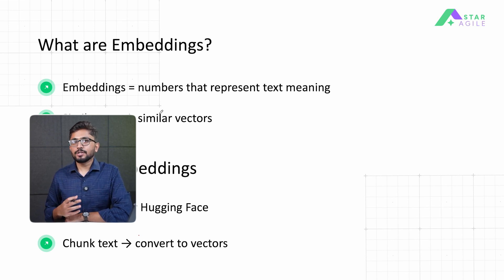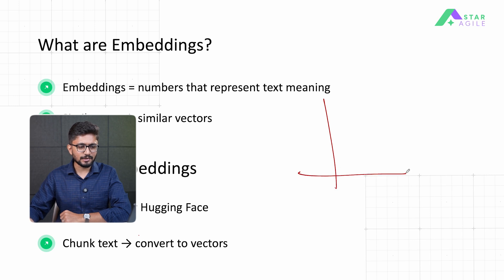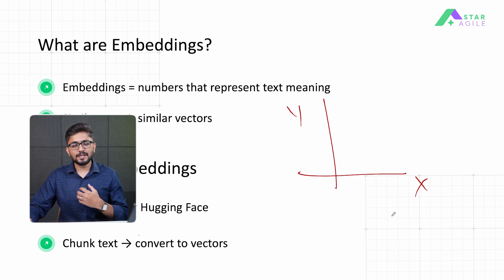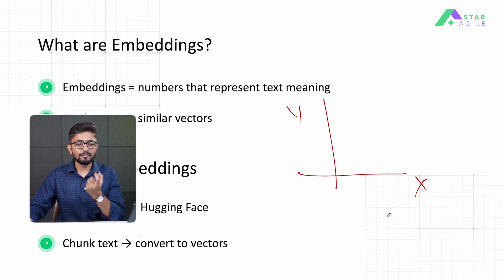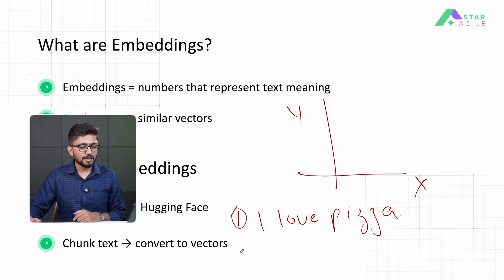Embeddings are vector representations of text on an n-dimensional plane. Let's break it down with a simple two-dimensional graph. Consider this two-dimensional axis with x and y-axis. What embeddings essentially do is take a piece of text and represent the meaning of that text into a vector. On this two-dimensional plane, let's take a few sentences for example. The first sentence is 'I love pizza' and the second sentence is 'I want to have a pizza.'